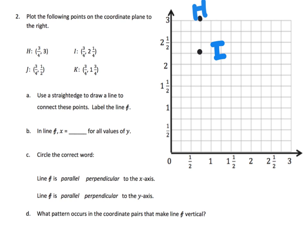J is at (¾, ½) — three-quarters again; we're starting to see the pattern. Here's our three-quarters, now I just have to go up to one-half on the y-coordinate — there it is, and that's J. Then K is (¾, 1¾) — three-quarters again — and one and three-quarters on the y is right there, and that's our K.